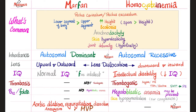Now the differences. Marfan is autosomal dominant; homocystinemia is autosomal recessive. Both have lens subluxation or dislocation — in Marfan syndrome it is upward and outward, while in homocystinemia the dislocation is downward and inwards. Marfan has fine intellect, but homocystinuria is associated with low IQ.